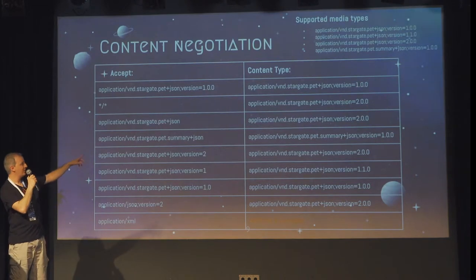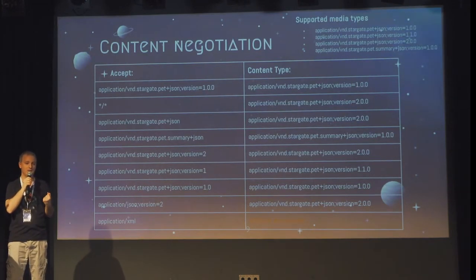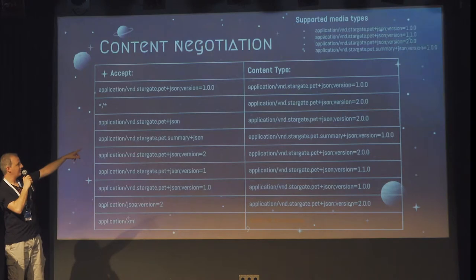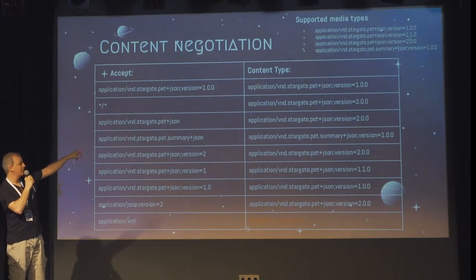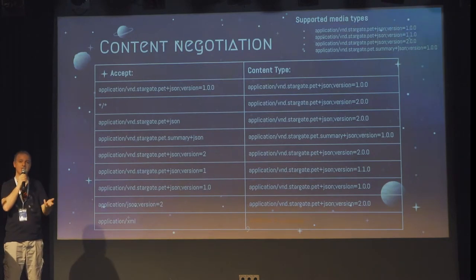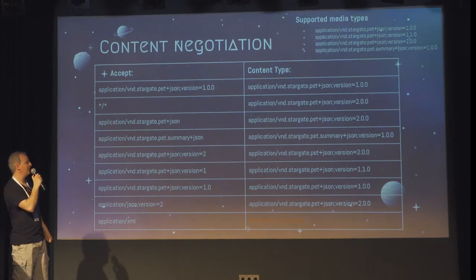In that case, it's not just JSON — it's JSON with semantics of PET version 1, or PET version 1.1, or PET version 2.0.0, or PET summary. So the client can request a specific media type and expect that the server answers it.